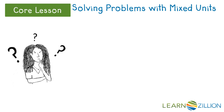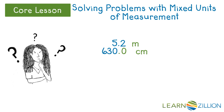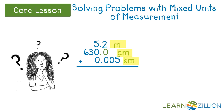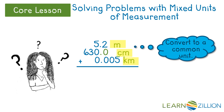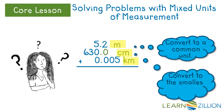Solving problems with mixed units of measurement. Often, you will have to solve problems that involve more than one unit of measurement. It's difficult to tell how these measurements compare because each one is given in a different unit. Obviously, it is necessary to convert these measurements to a common unit. It really doesn't matter which unit you choose, but sometimes it's easier to convert them to the smallest unit because it involves multiplying, which usually means fewer decimal points to worry about. With that in mind, the smallest unit of the three given here is centimeters.